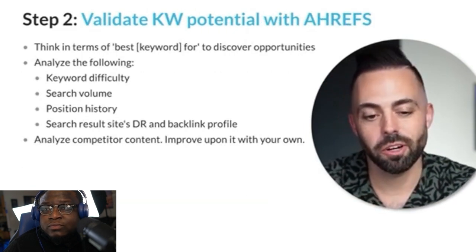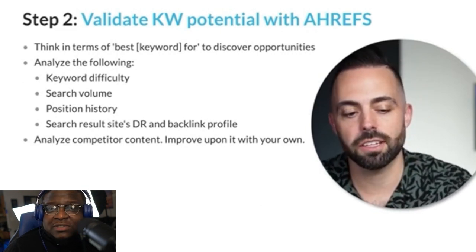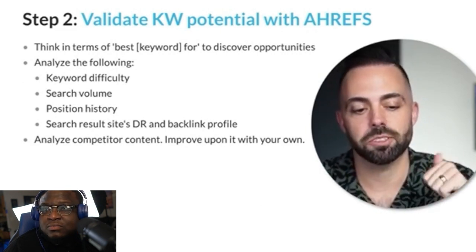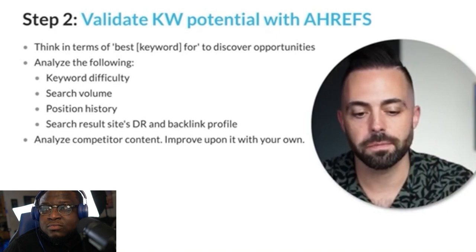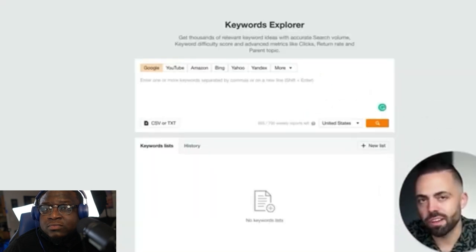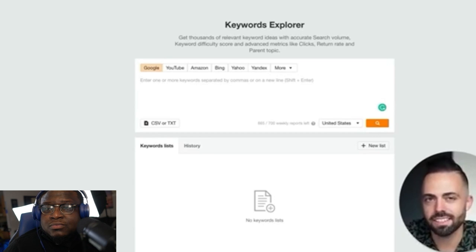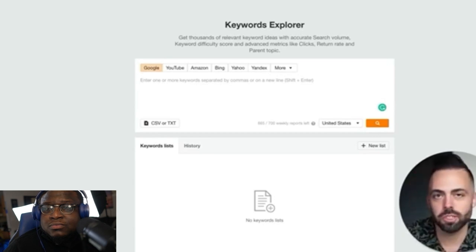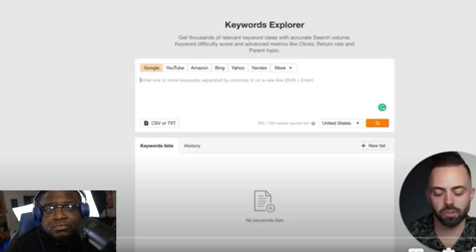You want to validate this keyword — that's a nugget. Think in terms of these 'best' phrases, then analyze: keyword difficulty, search volume, position history, and the backlink profile. We use AI initially to come up with broad ideas, and then we want to validate these keywords using a tool like Ahrefs.